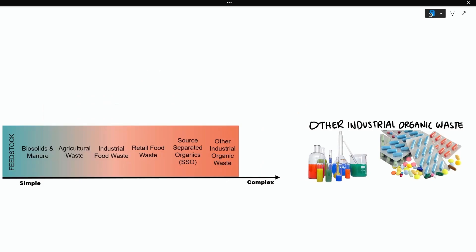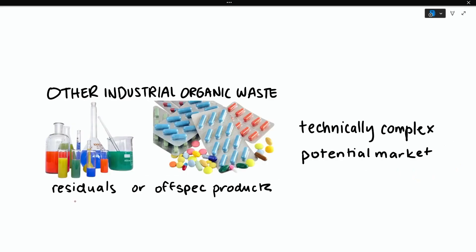Other industrial organic waste is a catch-all category that covers any organic waste that could be biodegradable from industries outside of food and beverage manufacturing. This could look like residuals from a biofuel refinery, off-spec medicine from pharmaceutical manufacturing, or chemical manufacturing byproducts. On the technical feasibility side, a lot of chemical and pharmaceutical organic waste have ingredients that kill biology. Organic waste outside of the food and beverage industries may also be harder to degrade. With recent interest in producing more biodegradable materials, their waste can be an avenue to explore for AD.